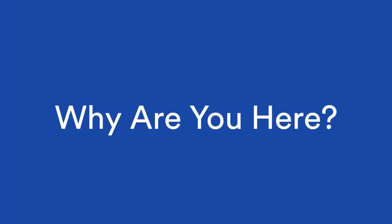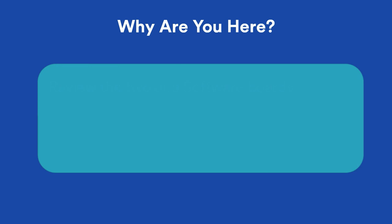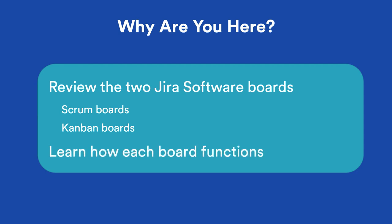This is the first in a series of tutorials that will introduce you to the basics of Jira software. In this tutorial, you'll learn about the two Agile boards: Scrum and Kanban. You'll also learn how each board functions to help you and your team plan and execute work.